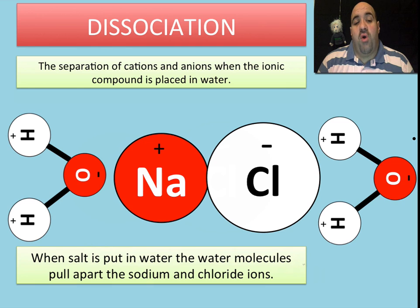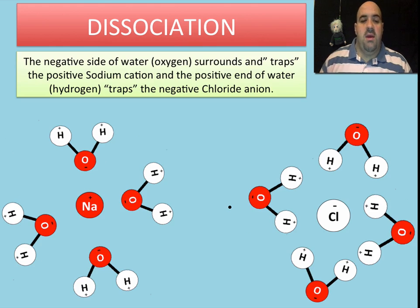The oxygen ends of water are going to be attracted to sodium because these are negative, these are positive. Opposites attract. The hydrogen end of water is going to be pulling on the chloride anion. And essentially what the water molecules are going to do is they're going to pull it apart through electrostatic attraction. And essentially what happens is you get a sodium, which is going to be surrounded by a bunch of oxygens because opposites are attracting. They're kind of like trapping it in there.